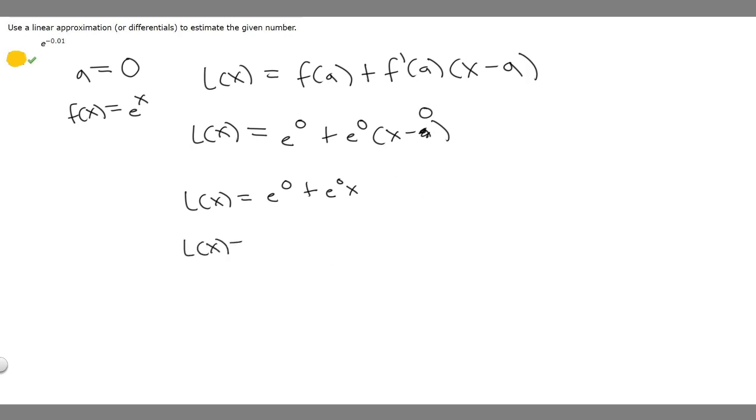So L(x) equals e^0, which is just one, plus e^0, which is one, times x. So one plus x. We know what x is - it's our number here, which is -0.01.